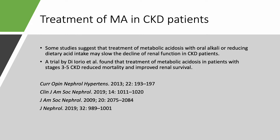How do we treat patients with metabolic acidosis and chronic kidney disease? At earlier stages, when they don't need dialysis, you give them oral alkali — usually oral sodium bicarbonate. If they are uremic and need dialysis, you start them on dialysis and can easily correct the acidosis. Some studies have shown that treating metabolic acidosis with oral alkali, or reducing dietary acid intake by reducing animal protein intake, can actually slow the decline of renal function in CKD patients.